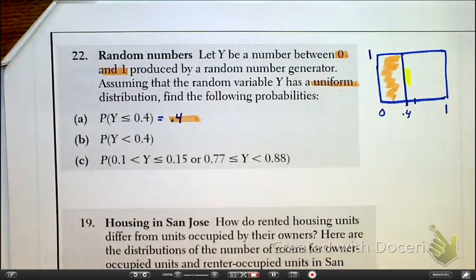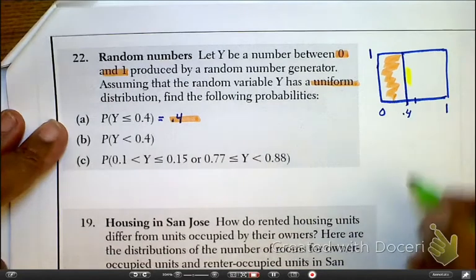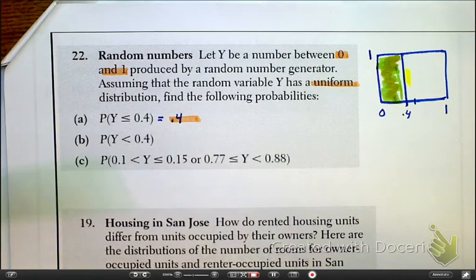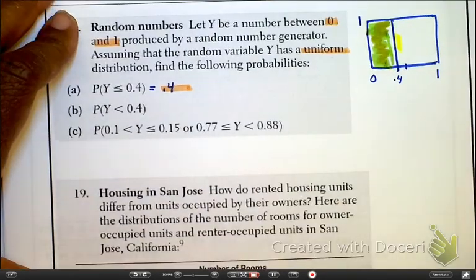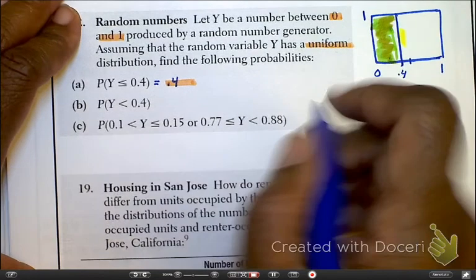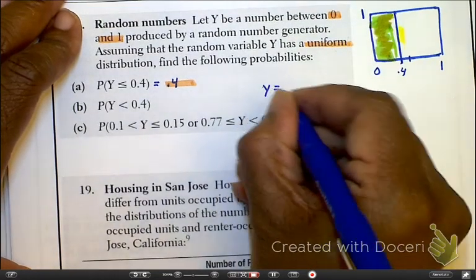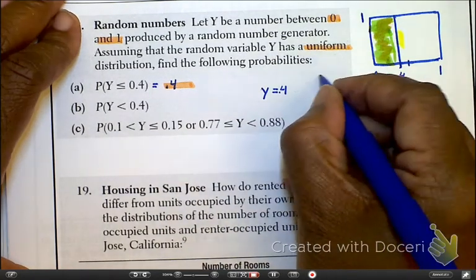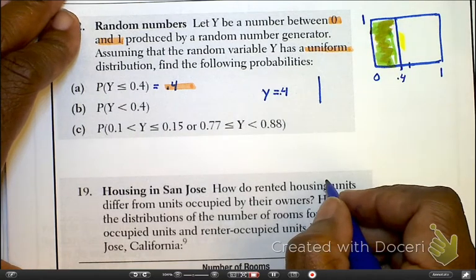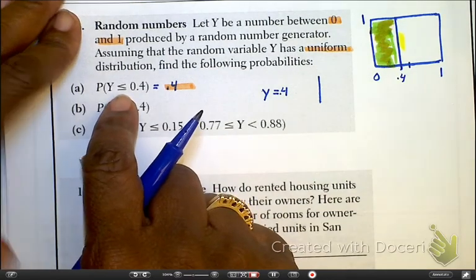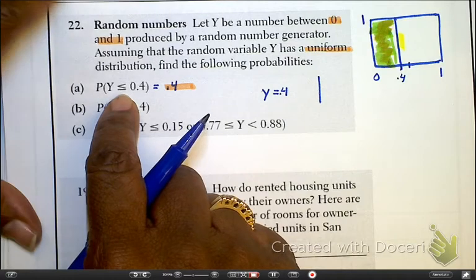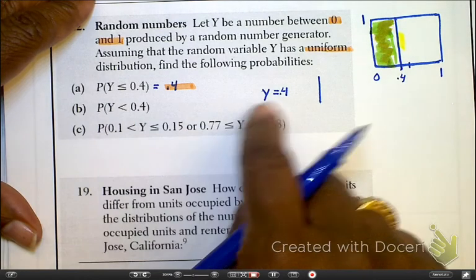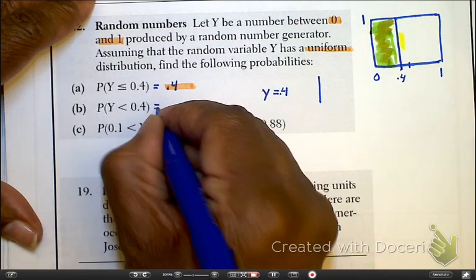Now here, less than 0.4 is still going to be shaded, but it's not going to include 0.4. So as I stated earlier today, since we're talking about area under the curve, Y equals 0.4 is not an area, it's the destination. It cuts it in half. And we know, mathematically speaking, the only difference between these two is the or equal to portion. So because this is not an area under the curve, the answer is going to be exactly the same.